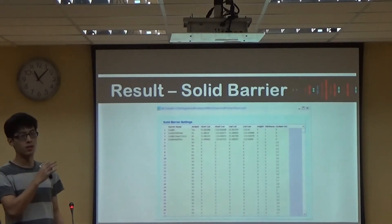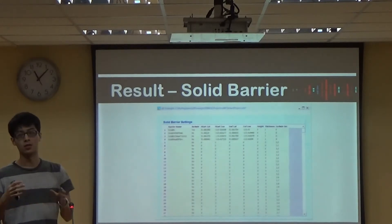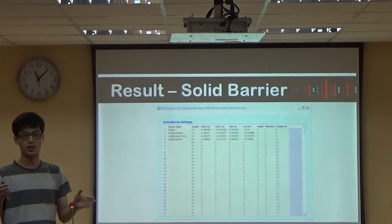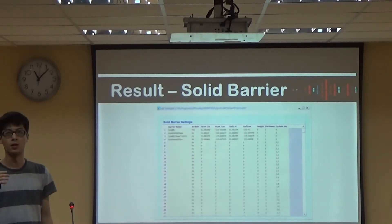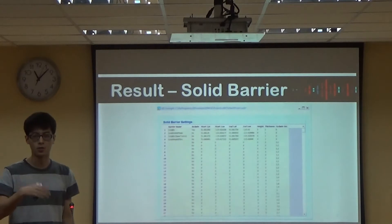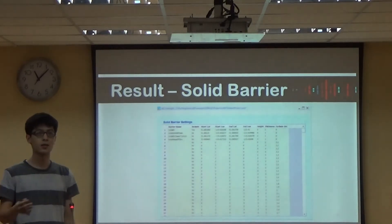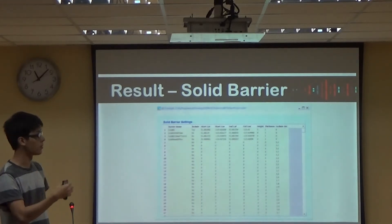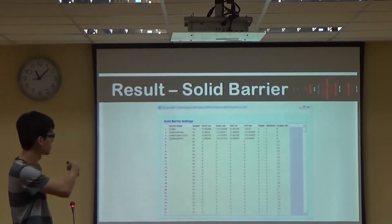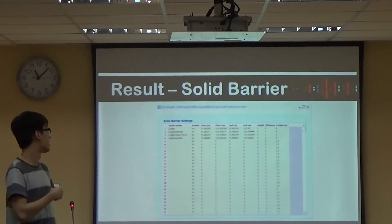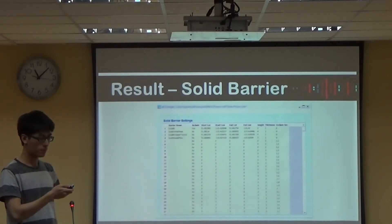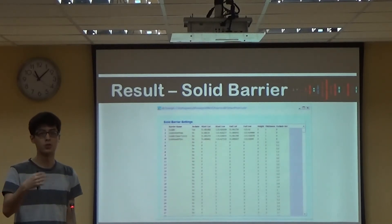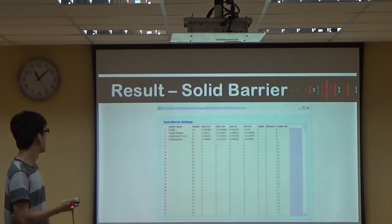Next, the solid barrier: this program can show how a solid barrier affects the spread of noise. In order to reduce noise spreading from the point of the source to the surrounding area, industrial practitioners can address the solid barrier using this program by adjusting values in the solid barrier settings. You can know what kind of barrier to put in order to reduce the noise produced.